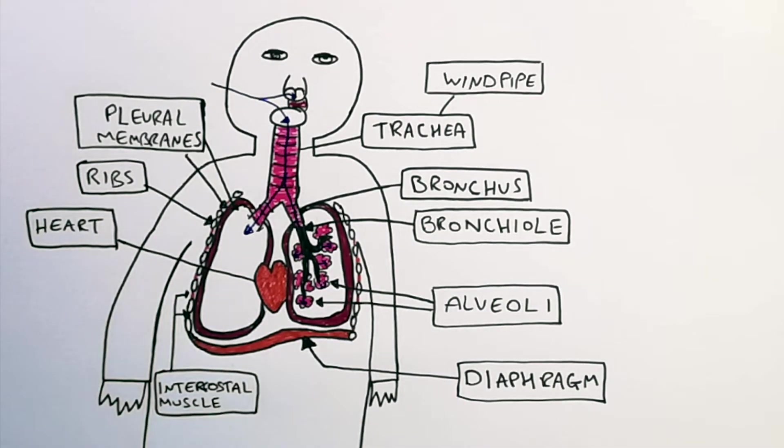The alveoli, of which we have 600 million, is where gas exchange happens in our lungs, where oxygen is absorbed and CO2 is released back out into the atmosphere.